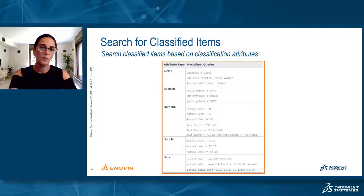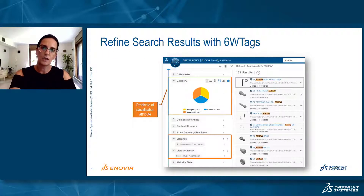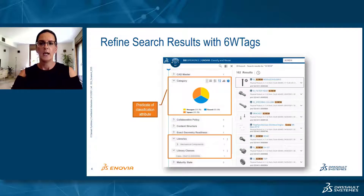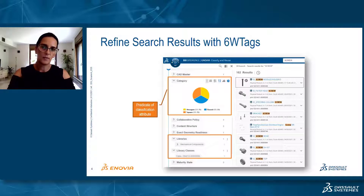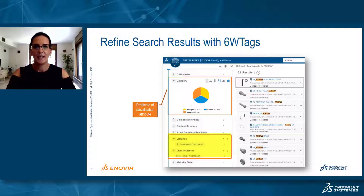While performing a search — either a global search or a Search Within — you get your search results and you can refine them with the 6W tag. In the 6W tags, you can see the list of libraries and the list of classes the items are associated with, including the number of items for each class and library.